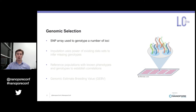Genomic selection is the use of genomic information to inform selection decisions. Traditionally phenotype has been used in agriculture to select superior animals, but in the early 2000s a method to incorporate genomic information was developed.